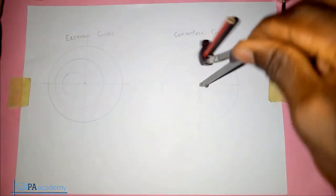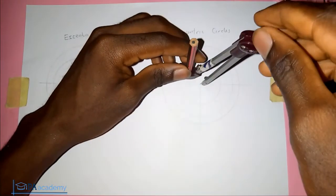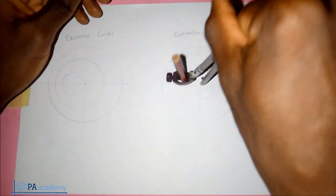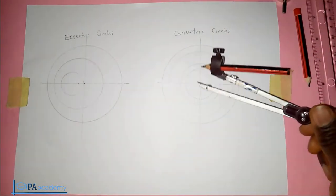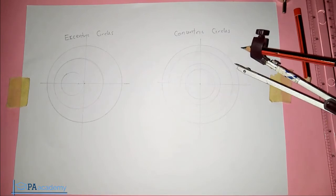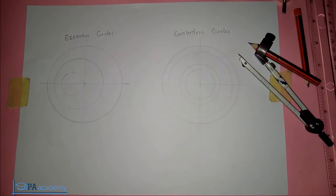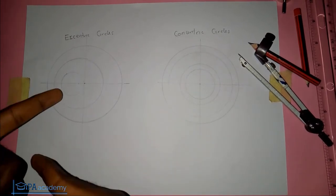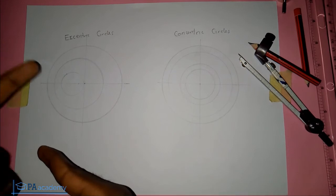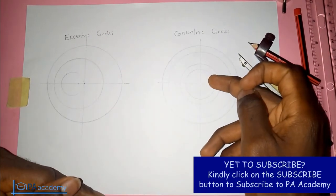No matter the number of circles you want to draw, you're still going to be drawing it within the same center. This is a concentric circle because the center is the same — even though the radius of the circles are different, the important thing is the center. So this is the difference between a concentric circle and an eccentric circle: for eccentric, the centers are different, while for concentric, the centers are the same.